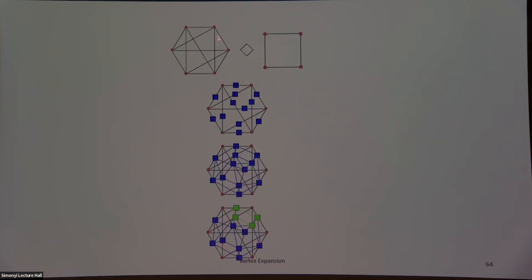I take this 4-regular graph, take the line product, and replace each one of these cliques with a copy of a four-cycle. At the bottom, we have the four-cycle that corresponds to a vertex in the top right. The spectrum of the line graph has a simple relation. In fact, the only way we're going to reason about the spectrum of the original graph is through the expander mixing lemma.